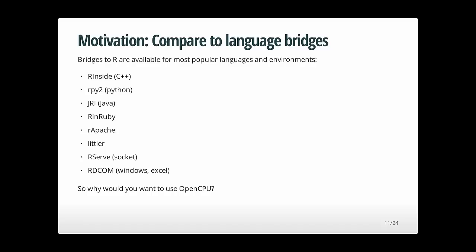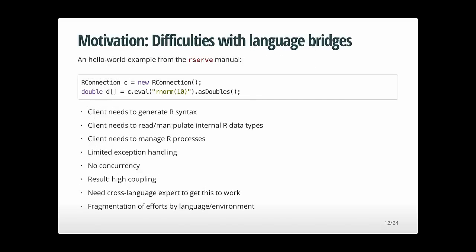The benefit is mostly the idea of separation of concerns. Here's an example from the Rserve manual — it looks simple: in Java you start a new R connection, push code to evaluate, and convert the result. But looking closely, the client needs a lot of knowledge about R internals, has to manage R processes, generate and push R syntax, and handle type conversions — what if you get doubles, or a data frame? Everything becomes very tricky on the client side. There's limited exception handling and no concurrency, creating high coupling in your application.